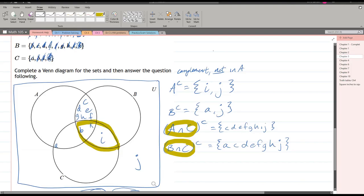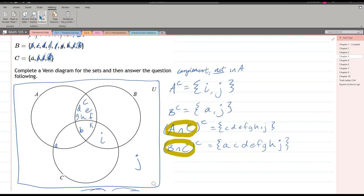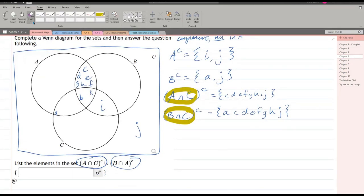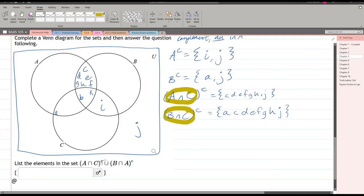We're almost done. Not quite done yet. There's one last step to this. So in between these two, there's a union. So we just took care of these separately. Now we're going to union these two sets together.